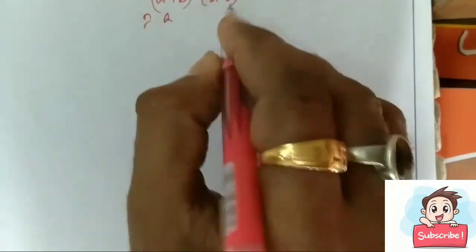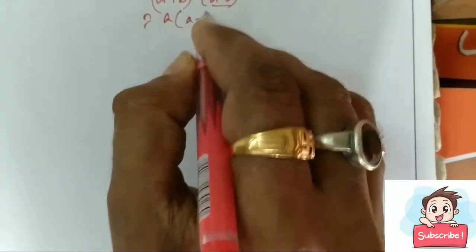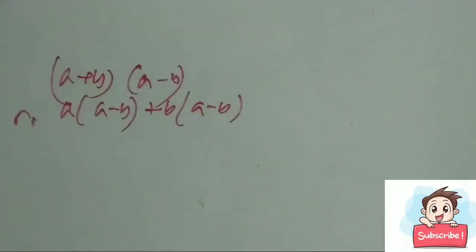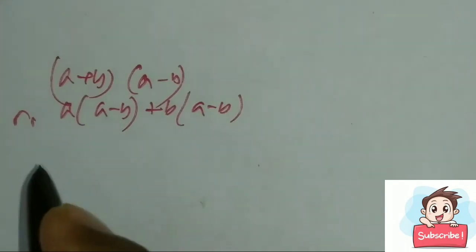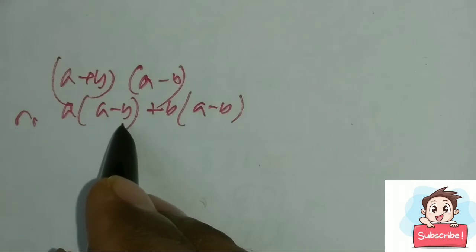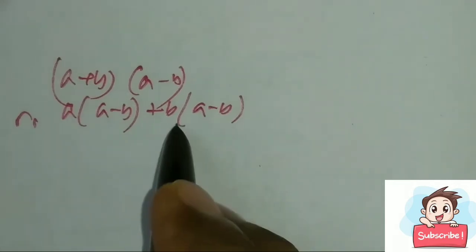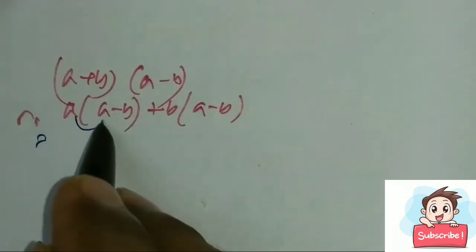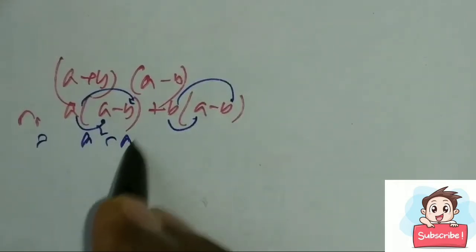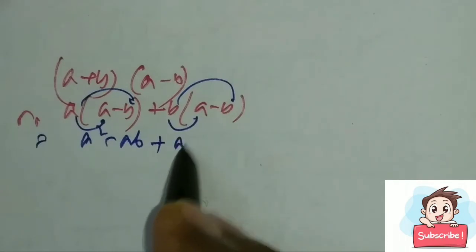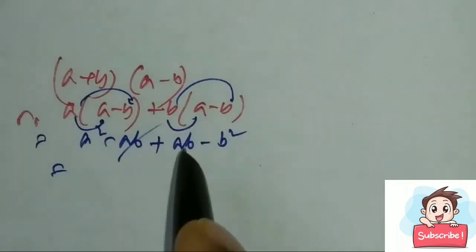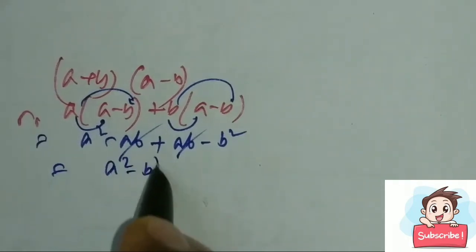So what is the value of a plus b into a minus b? We multiply a minus b by a and a minus b by b. We get a square minus ab plus ab minus b square.